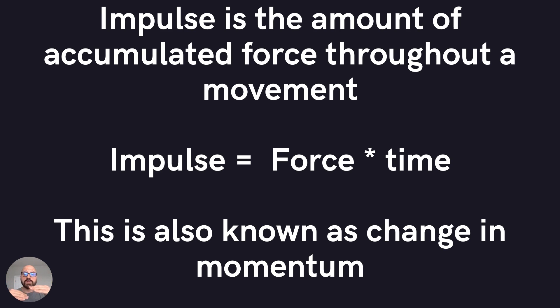So let's talk about like a vertical jump. We can use the impulse as the total force produced during the time it takes to complete the jump. Or we can calculate impulse in different portions of that jump. So the amount of force throughout the movement. It can be the entire movement or it can be parts of those movements.